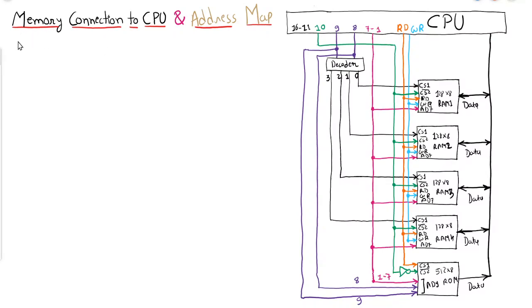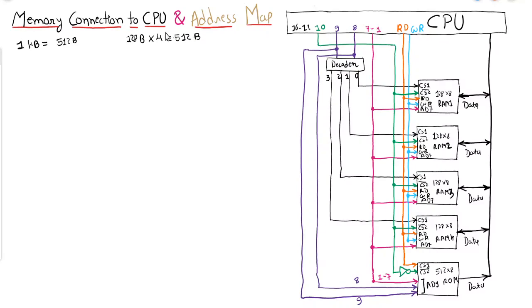Let us say we want to create a memory of 1KB using RAM and ROM. The size of ROM is 512 bytes and the size of RAM chip is 128 bytes. So 512 bytes will be created using ROM and 512 bytes will be created using RAM. Since each RAM chip is 128 bytes, we require a total of 4 RAM chips to create 512 bytes of RAM.